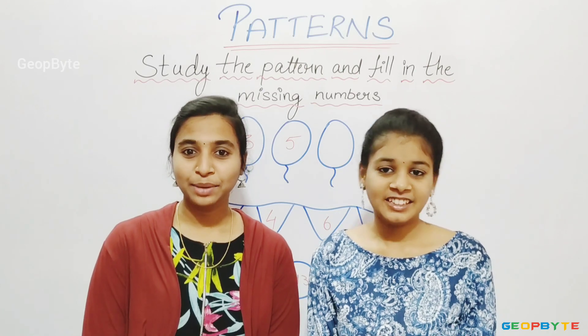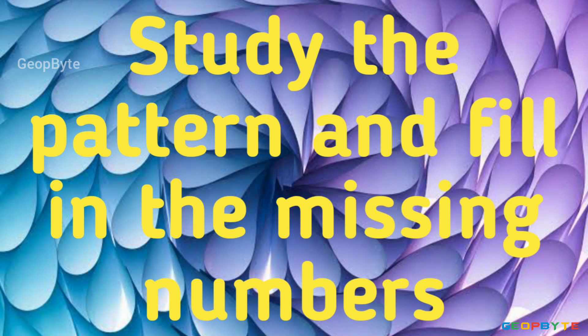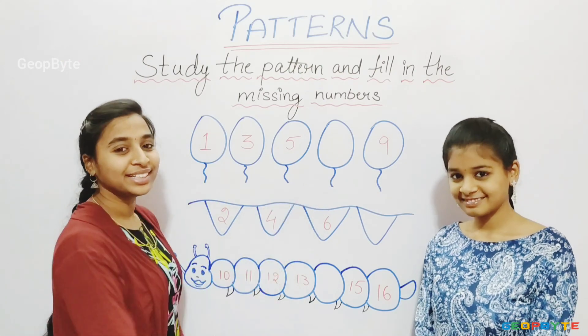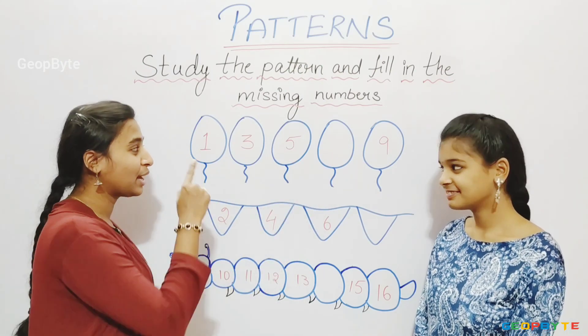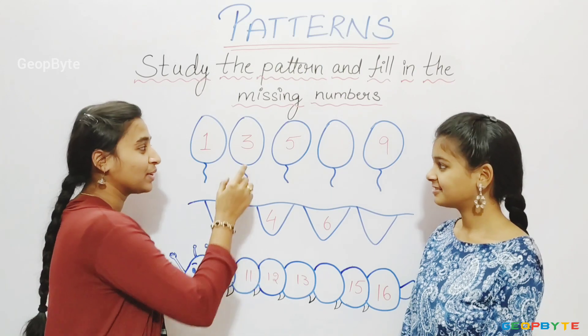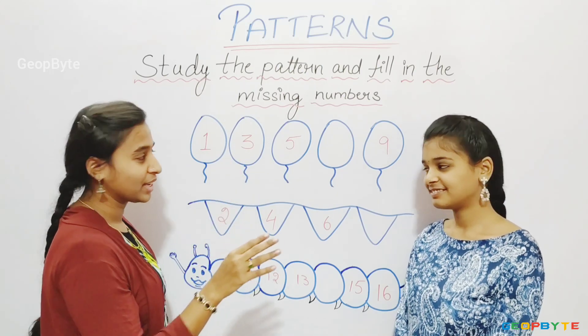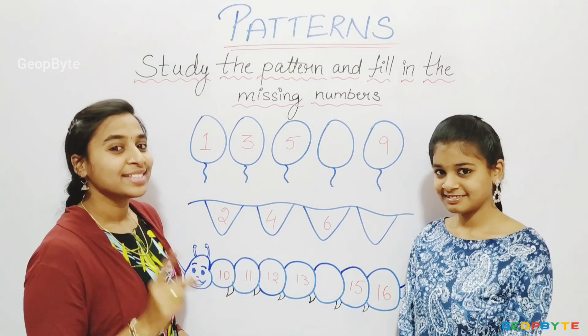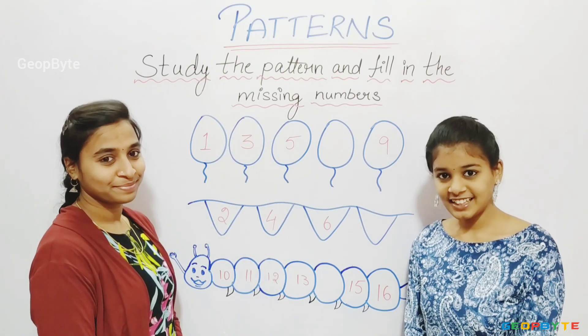Now we have completely understood the topic: Fill in the Blanks. Now let us get into the topic — study the pattern and fill in the missing numbers. See here — we have few balloons in a sequence. Let us see the numbers inside the balloons: 1, blank, 2, 3, blank, 4, 5, blank, 6. What comes after 6? 7. Let us write 7.